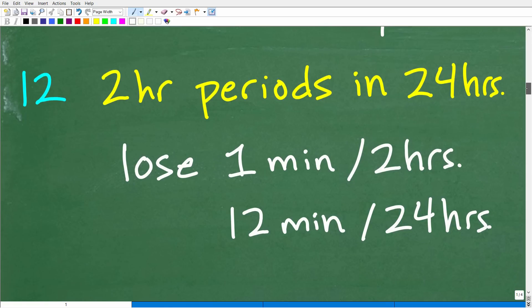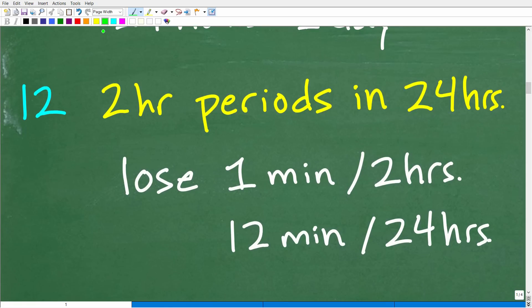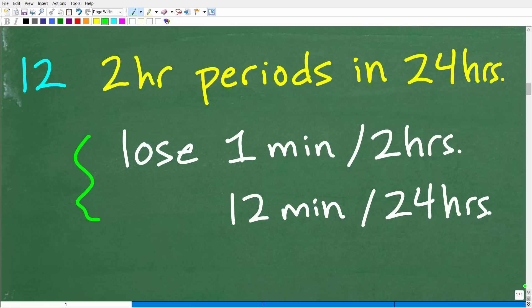And in every two hours, we're going to lose one minute. So how much total time are we going to lose in one 24-hour or one day? Well, there's 12 two-hour periods in 24 hours. So what I'm showing you here is only one way to think of the problem. Some of you might be saying, this is making this way more complicated. I could just figure this out, one, two, three. Well, congratulations, that's excellent.